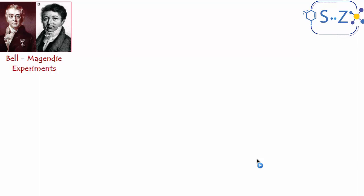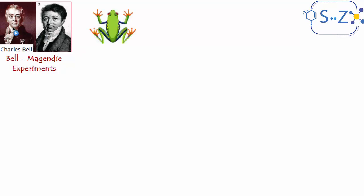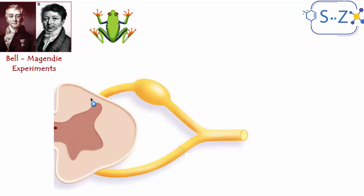Now we move to another series of experiments called the Bell-Magendie experiments, referring to the scientists who discovered what these experiments show — François Magendie and Charles Bell. Magendie used to do his experiments on dead animals, but the results weren't very clear. Charles Bell then applied the same experiments on living animals such as dogs. The experiments we're going to talk about are done on the spinal frog.